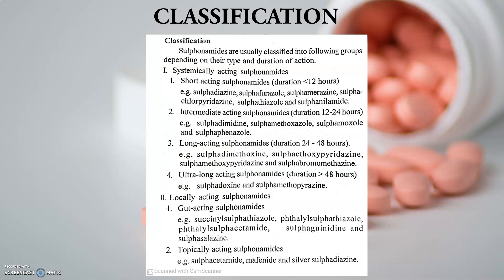The long acting sulfonamides include sulfadimethoxine, sulfabromomethazine, sulfamethoxypyridazine, and sulfaethoxypyridazine. The names are longer in the case of long acting sulfonamides — you can easily remember by the long names. They contain prefixes like methoxy, ethoxy, methasyl, and bromo, making the names bigger.